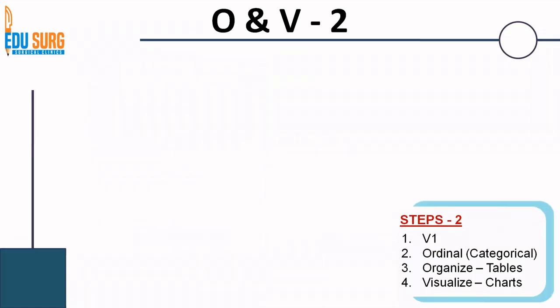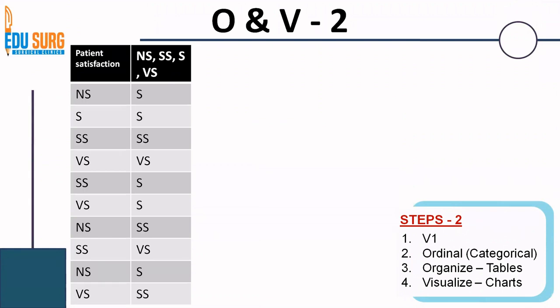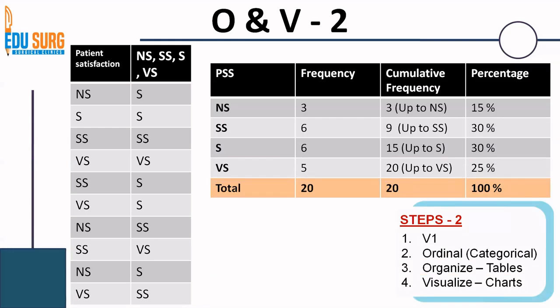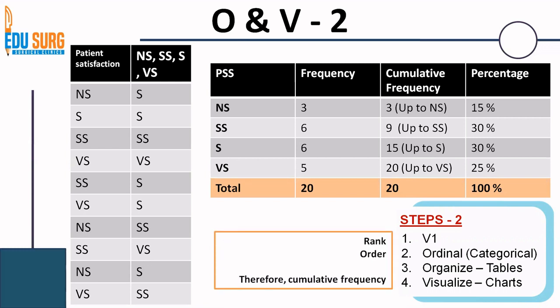Going to the next example, you have ordinal data, which we are going to organize into tables and then visualize into charts. In this first example, you have ordinal data. Why is this ordinal data? Because it is a patient satisfaction score where you have not satisfied, somewhat satisfied, satisfied, and very satisfied. The data has an order, but it is still categorical data because there is no interval or ratio. Again, you can use a frequency table to summarize this data, or you can have a relative frequency percentage table, or you can have a cumulative frequency table. Remember that here you have an order and therefore cumulative frequency can be used.